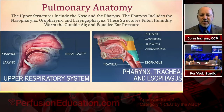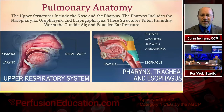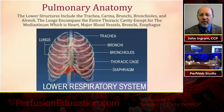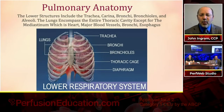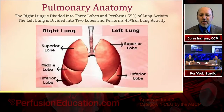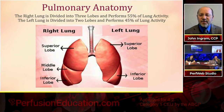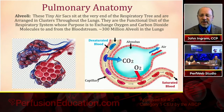Pulmonary anatomy starts with the upper structures — the nose and pharynx, which includes the nasopharynx, oropharynx, and laryngopharynx. These structures filter, humidify, and warm outside air, and help equalize ear pressure. The lower respiratory system includes the trachea, carina, bronchi, bronchioles, and alveoli. The lungs encompass the entire thoracic cavity except for the mediastinum — the heart, major blood vessels, bronchi, and esophagus. The right lung has three lobes and performs about 55% of lung activity; the left lung has two lobes and performs about 45%, displaced slightly by the heart.